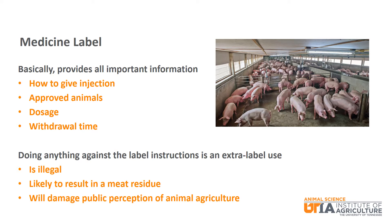It is important to only give the medication how it says on the label. The species and animal class are the only approved animals that a particular medication can be given to. This might be all swine, or only non-lactating sows, or some other combination. The dosage is how much of a medication can be given. Giving more than the correct dosage can result in a drug residue in the meat. The withdrawal time is the amount of time after a medication is given that the animal must be held before being sold or entering the food chain. Not following the withdrawal time can also lead to a drug residue in the meat.